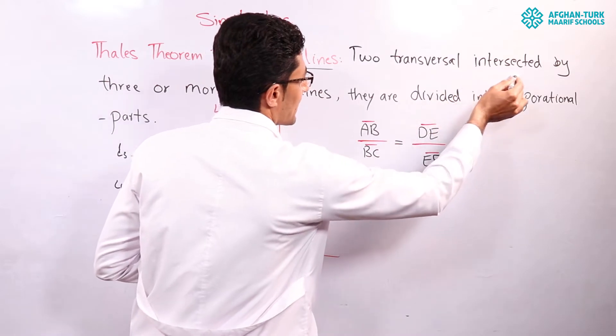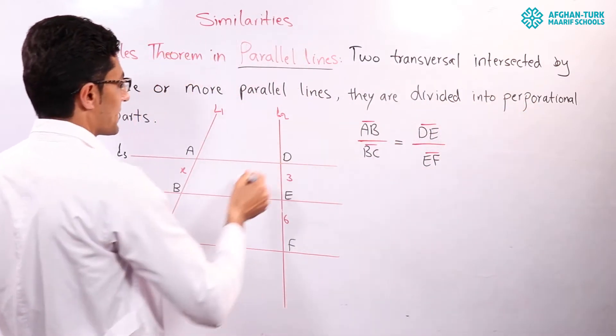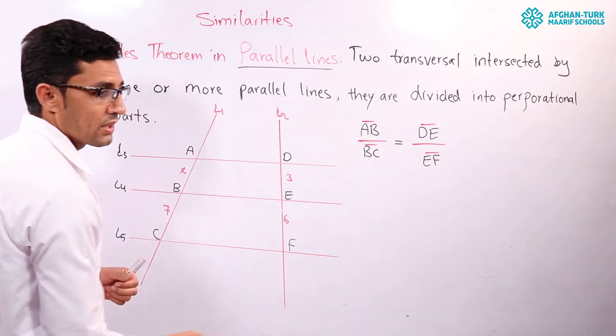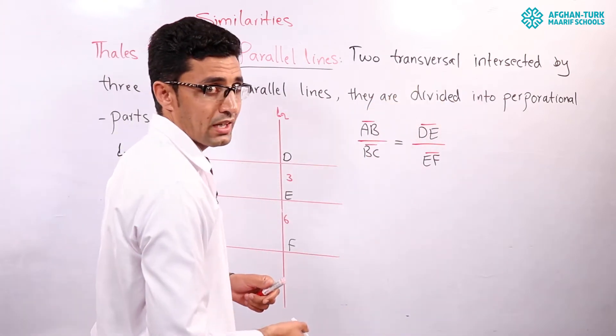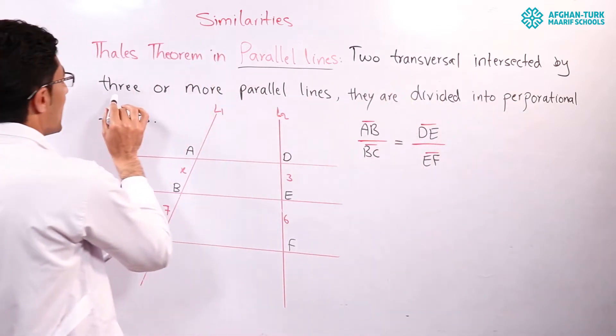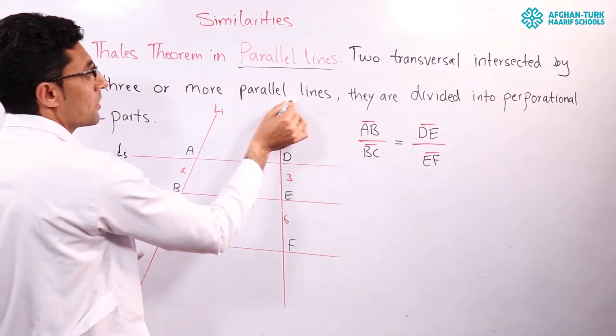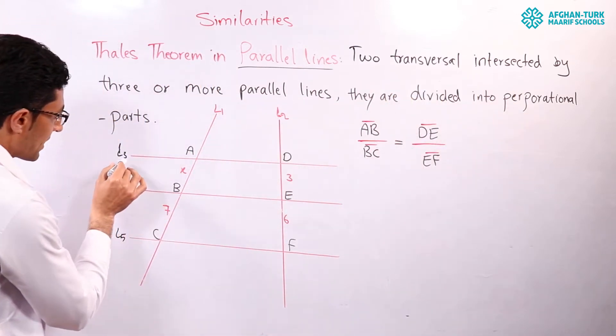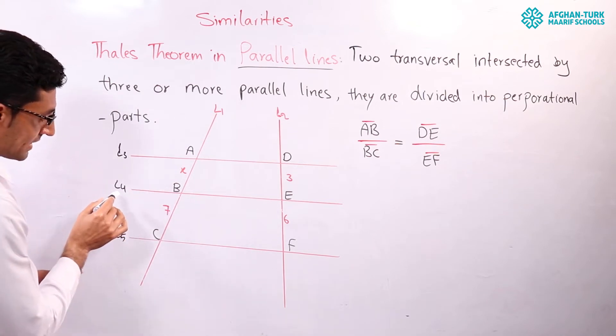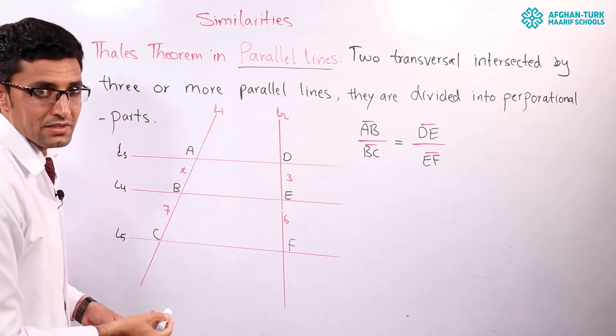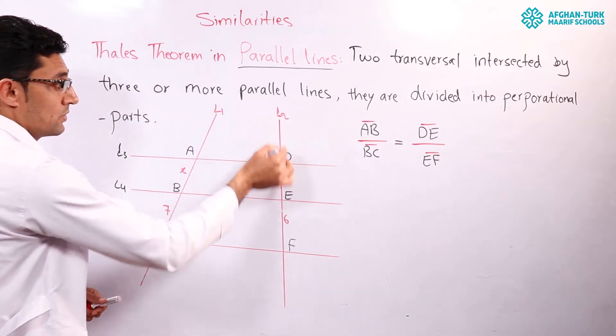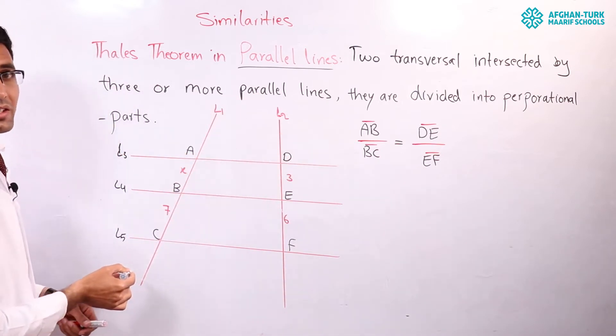Two transversals intersected by what? By three or more parallel lines. There are two lines called transversals. How many parallel lines do we have? L3, L4, and L5, or you can have more parallel lines. Two transversal lines.